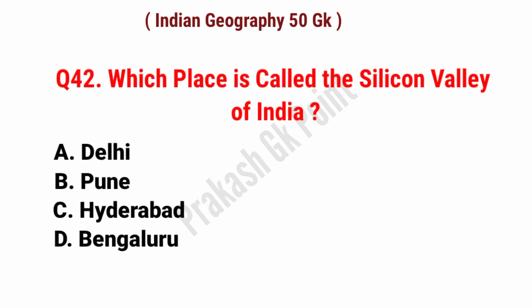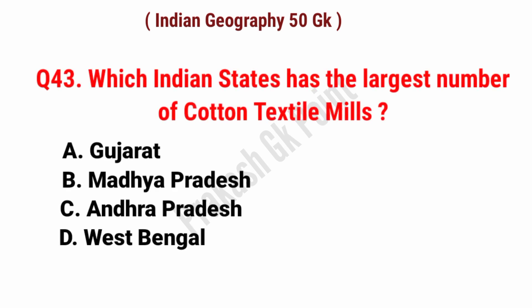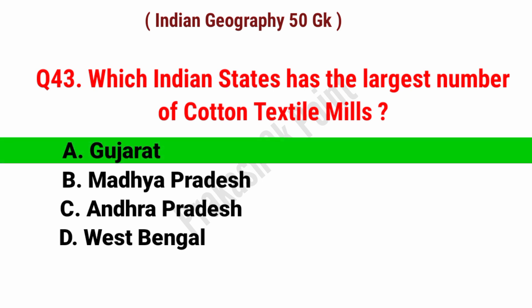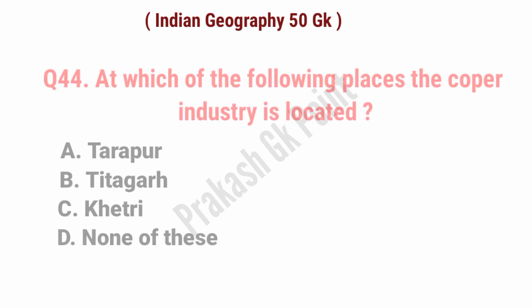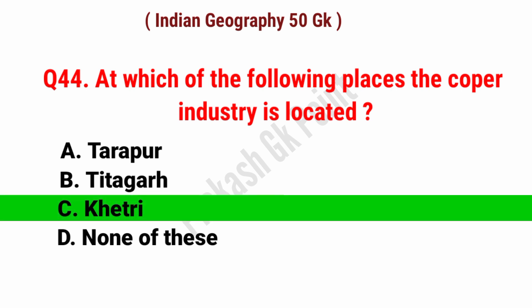Which place is called the Silicon Valley of India? Answer: option D, Bengaluru. Which Indian state has the largest number of cotton textile mills? Answer: option A, Gujarat. At which of the following places is the copper industry located? Answer: option C, Khetri.